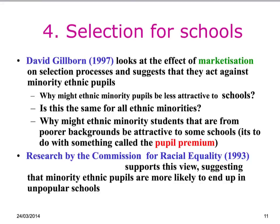Regarding selection for schools — since the 1988 Education Reform Act, David Gillborn looked at the effect of marketisation on selection processes and said they act against minority ethnic pupils. Consider: why might ethnic minority pupils be less attractive to schools? Is this the same for all ethnic minorities? Why might ethnic minority students from poorer backgrounds be attracted to some schools? This links to the pupil premium — find out what the pupil premium is and why a school might want a high proportion of students on it.